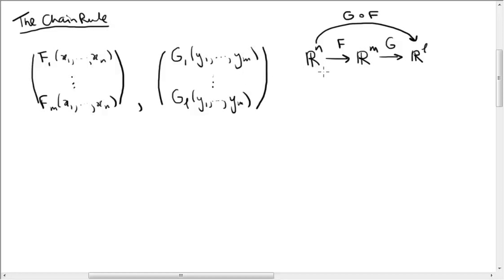First of all, we're going to think of that as a function f from Rⁿ to Rᵐ, and a function g from Rᵐ to Rˡ, and we're going to take the composite g composed with f, which is then a function from Rⁿ to Rˡ.